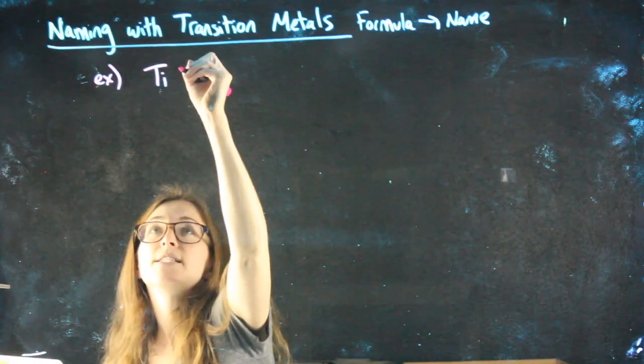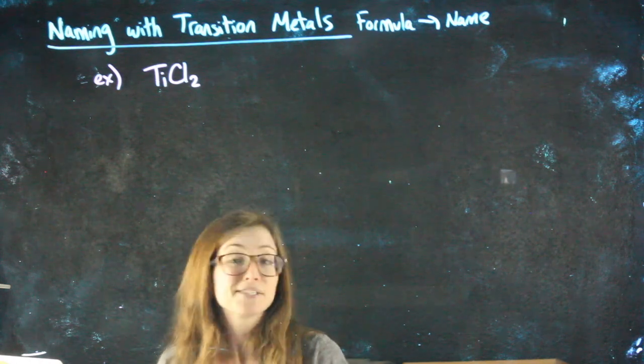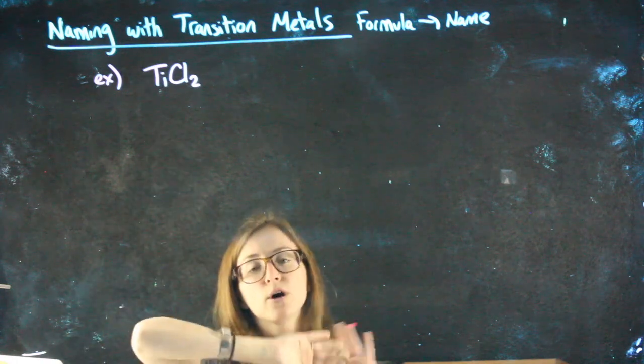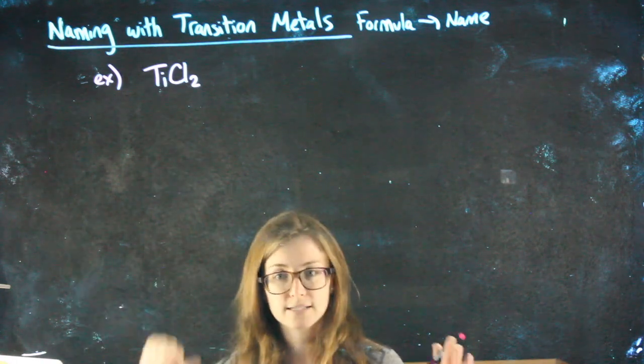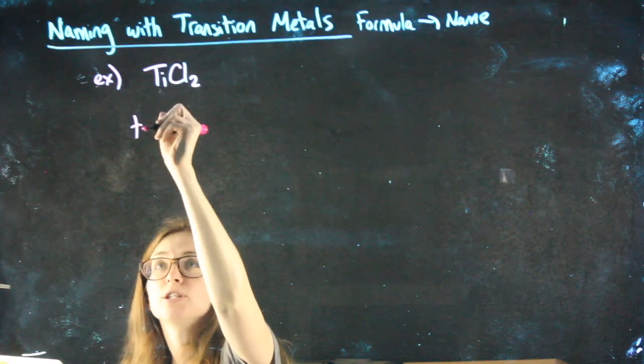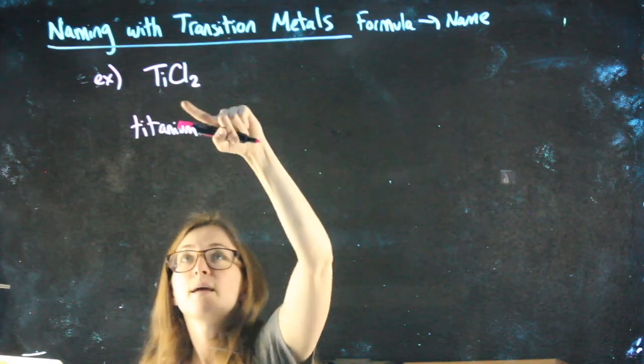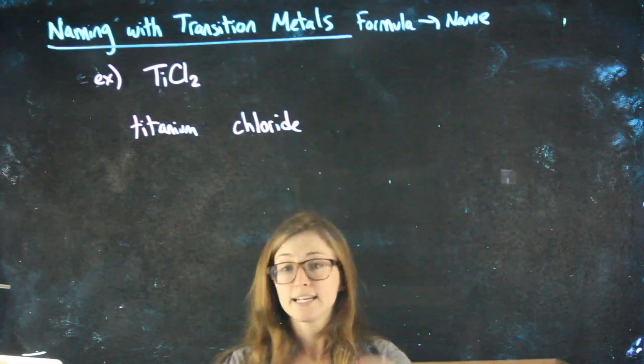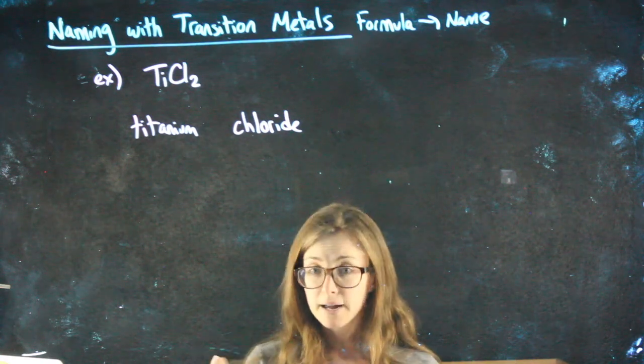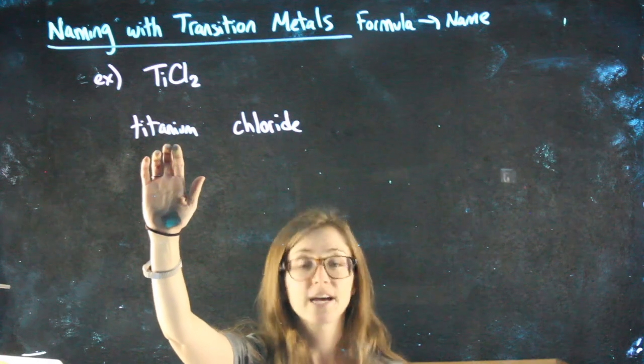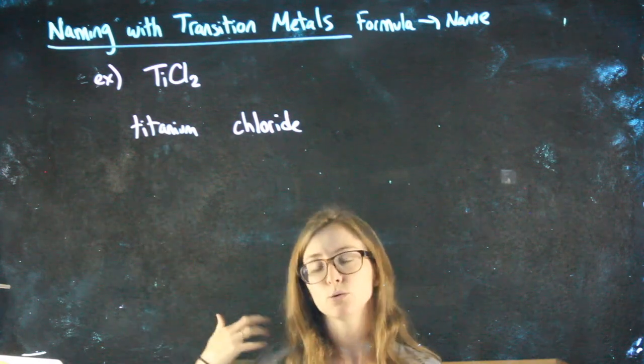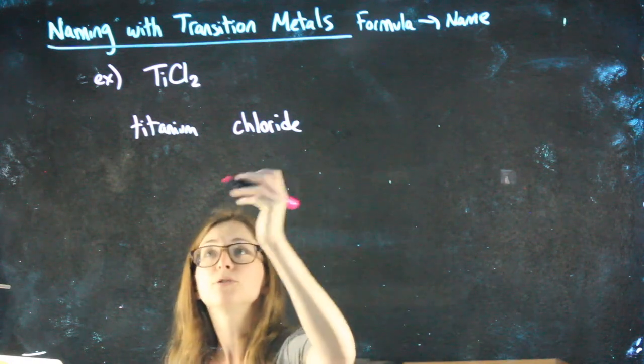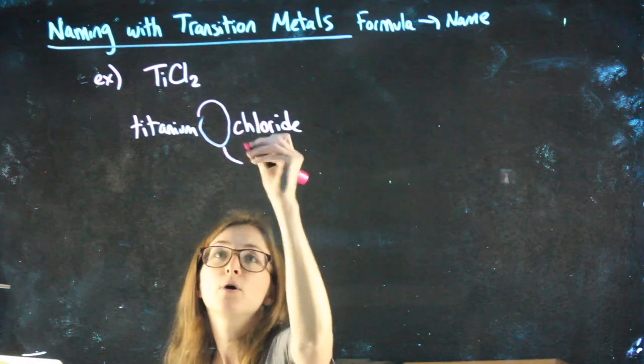For example, let's say I want to name TiCl₂. You can pronounce it tickle two if you want, it's kind of fun, but that's not actually its name. I'm going to start naming it how I would normally, how we learned last class. So the name of the first thing doesn't change, it's titanium. The name of the non-metal, the second thing, change its ending to -ide, so chloride. Titanium chloride, nothing different you would think, but we need to be more clear about which ion of titanium we have. In this case, we need to be really explicit with what titanium's charge is, and we do that by in the middle here, we're gonna put a Roman numeral.